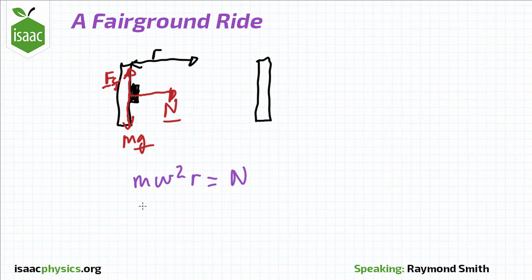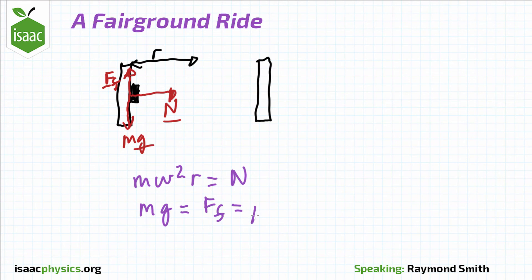We also know that the body is in equilibrium vertically, thus mg, the weight, equals f subscript f, the friction force, which is also equal to mu N. Rearranging these equations will give the required expression for the angular speed.